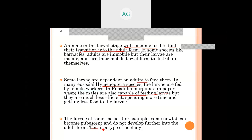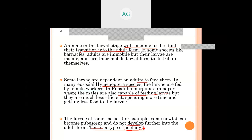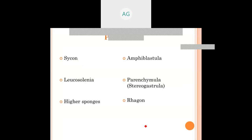Some organisms show neoteny. If conditions are unfavorable for the adult stage, the larvae — which are immature and normally non-reproductive — can become sexually mature and show neoteny.